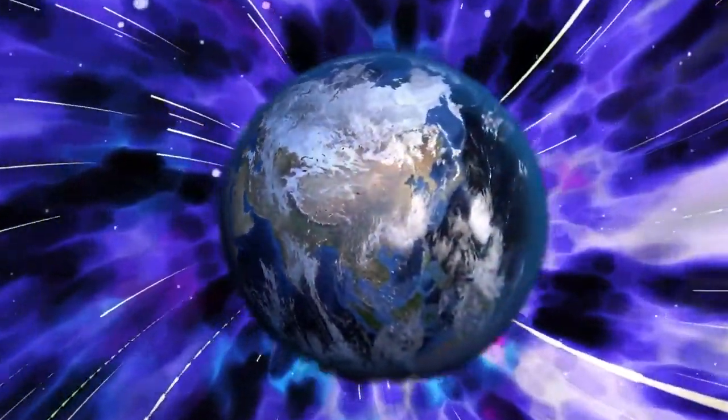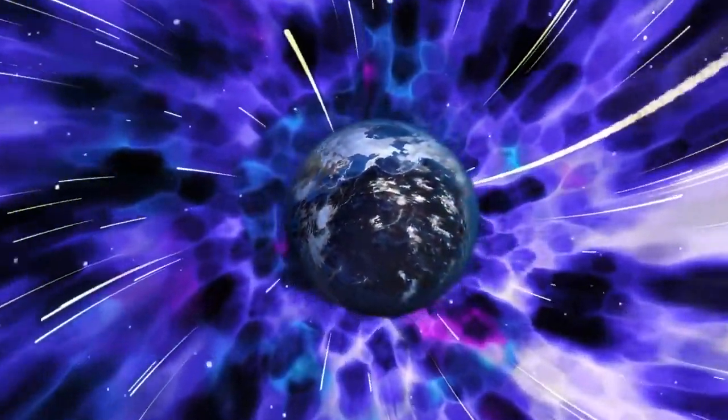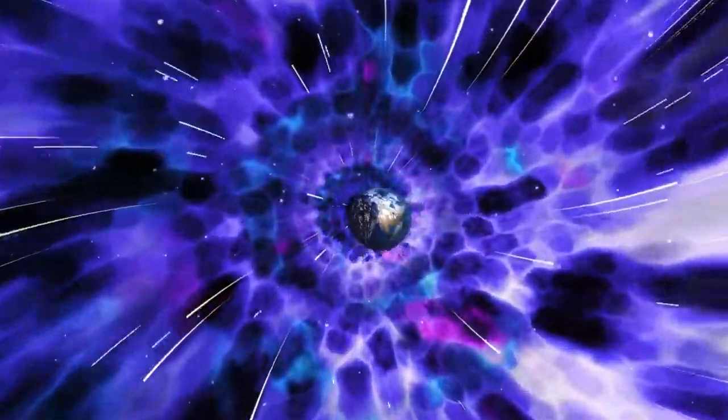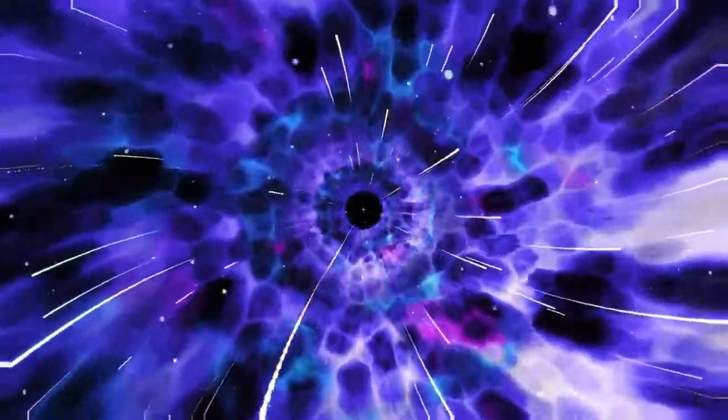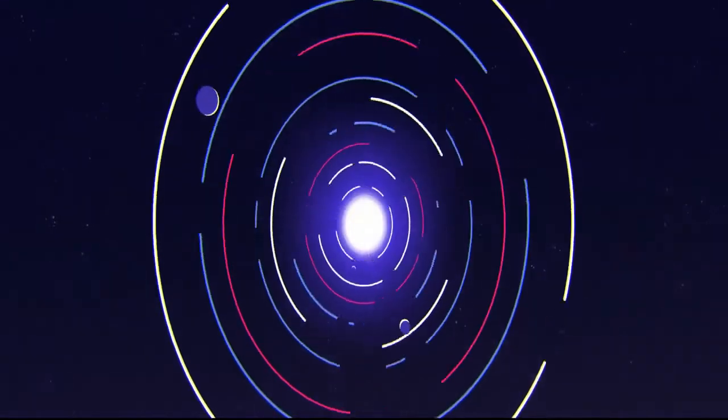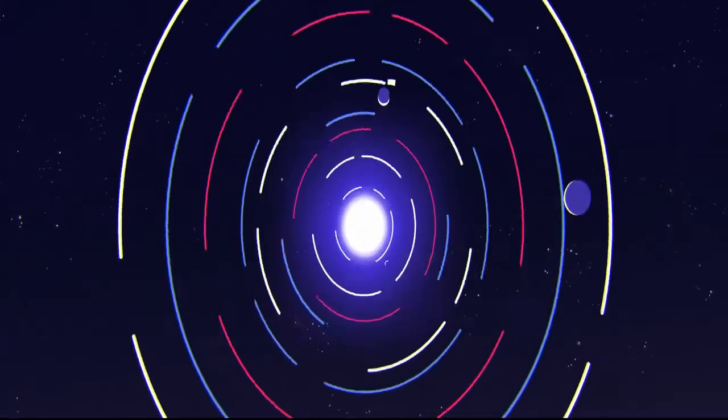The Event Horizon is the point of no return. Nothing can escape a black hole once it crosses the Event Horizon and we can never see what happens inside it. However, using math, we can get an idea of what it might be like.